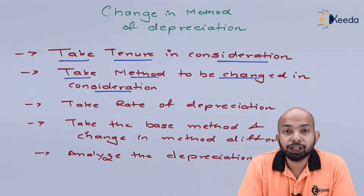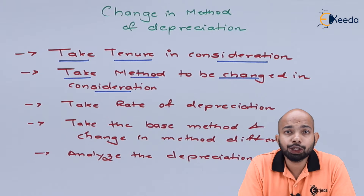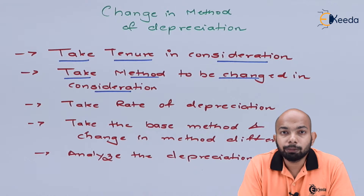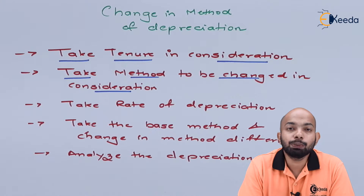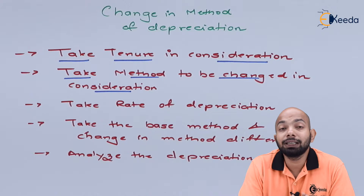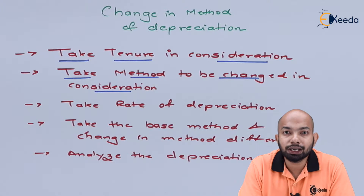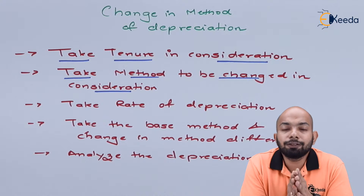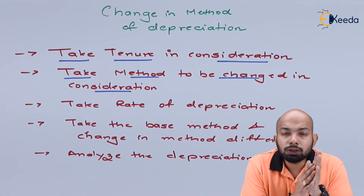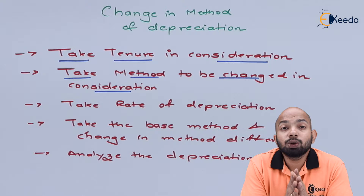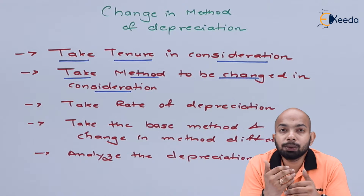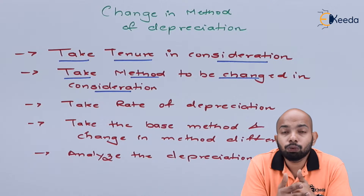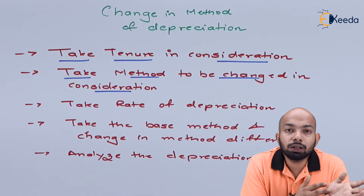The next point is to take the method to be changed into consideration. Under SLM method there is a fixed flat depreciation amount, but if the same method is changed to WDV, you need to justify what benefit you gain by making that change. Any change affecting the profit and loss account must be justified to senior management and governing authorities such as SEBI or accounting standards bodies, explaining why a specific method was selected over the earlier one.